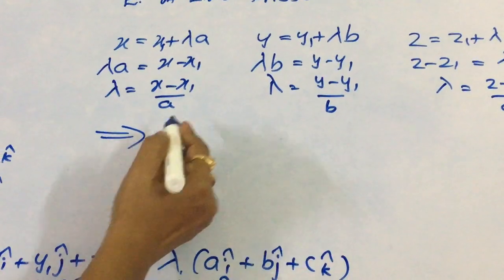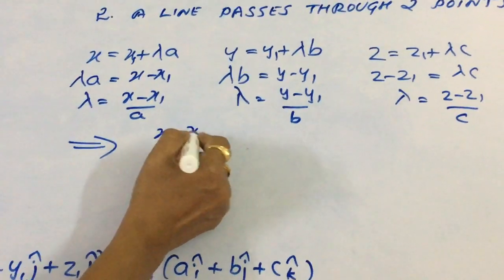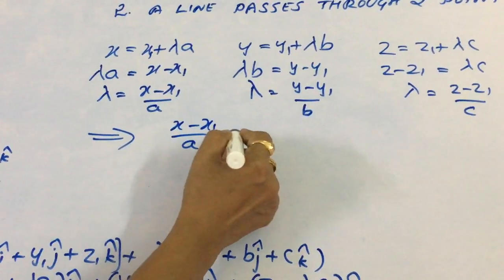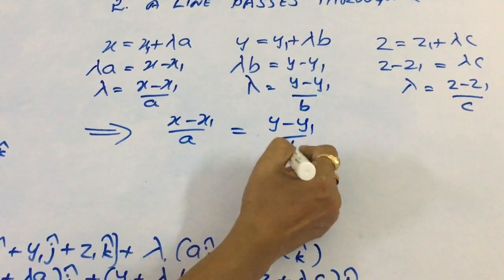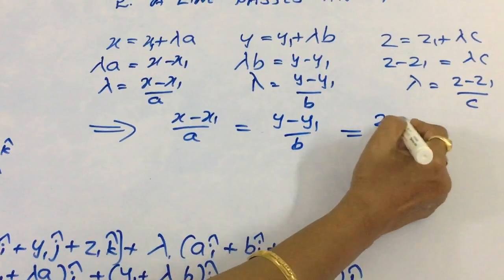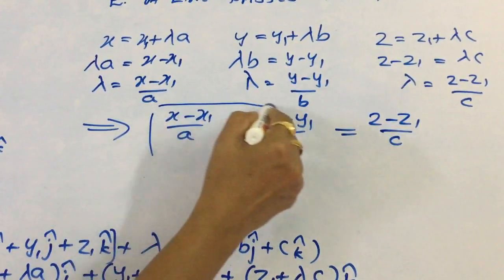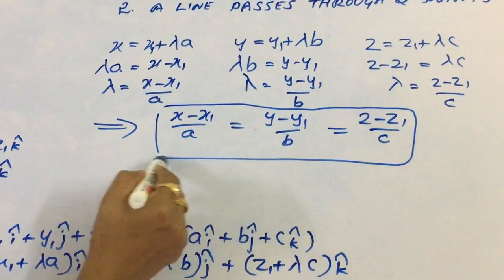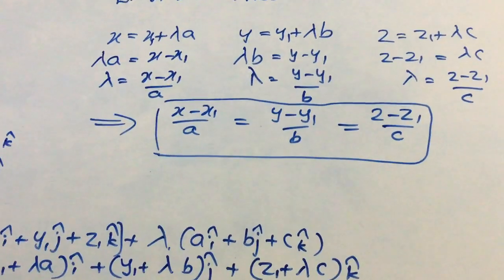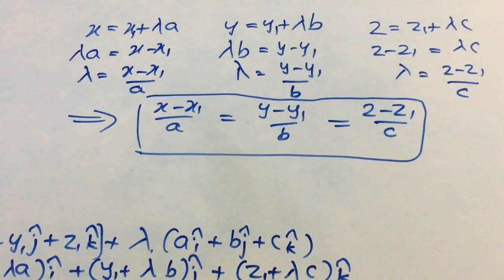Combining all these together, we get (x minus x1)/A equals (y minus y1)/B equals (z minus z1)/C. And this is the Cartesian equation of the line passing through the point and parallel to the given vector.